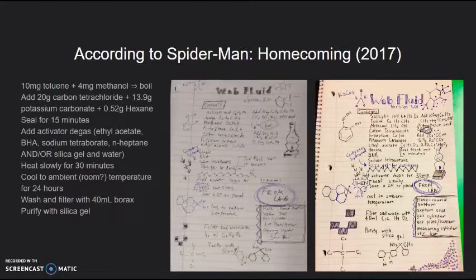Add the activator degas, which could be ethyl acetate, BHA, sodium tetraborate, and heptane, and or the silica gel and water. Heat slowly for 30 minutes. Cool to ambient room temperature for 24 hours. Wash and filter with 40 milliliters of borax, and then purify it with silica gel.